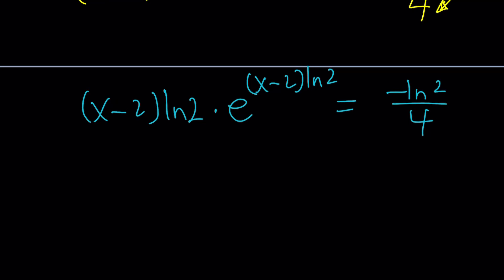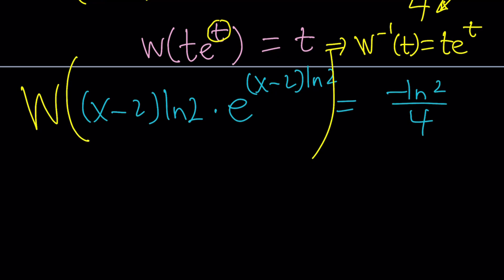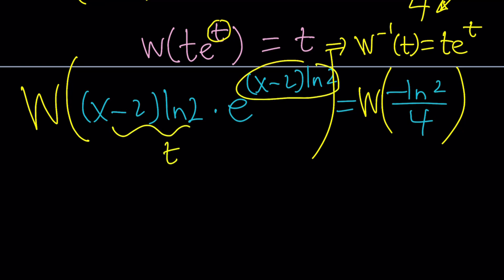So here's what I was trying to do. I wanted to get something that looks like t e to the t. Because I wanted to use Lambert's W. If you Lambert W of t e to the t, you just get t. So it kind of dissolves this expression — it's the inverse function for t e to the t. It's not one-to-one on the whole real line, so it should be invertible on a certain interval. Let's go ahead and apply W to both sides. Notice that this is my t, so I have t e to the t. If I W it, that gives me t, which is x minus 2 ln 2. And the right-hand side is just going to be some Lambert W value.